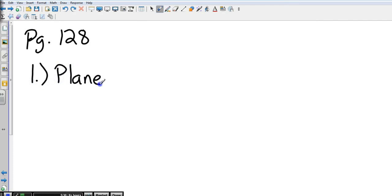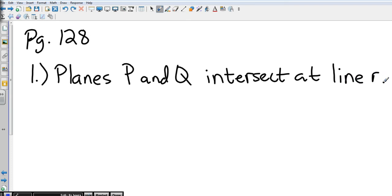Planes P and Q intersect at line r. First, is that a true statement? Looking at the example, do planes P and Q intersect at line r? What do the directions ask you to do? Explain whether it is true. So we explain whether it's true - that's our first answer. The first answer to this problem is true.